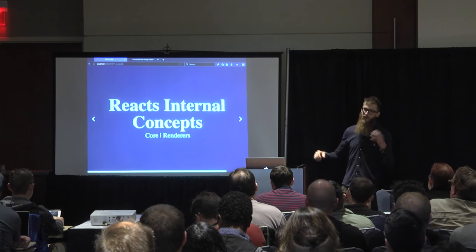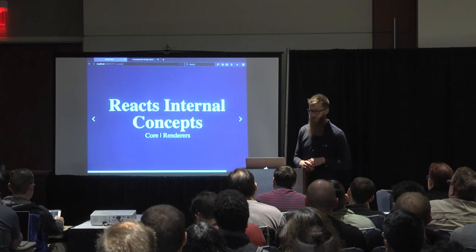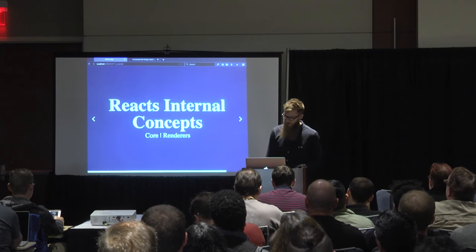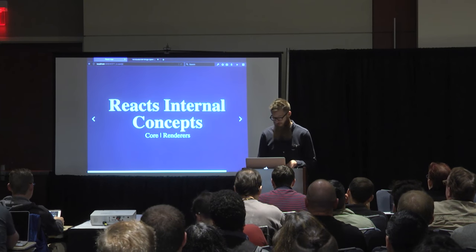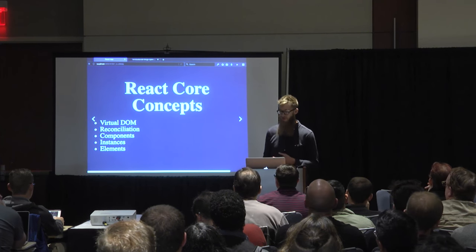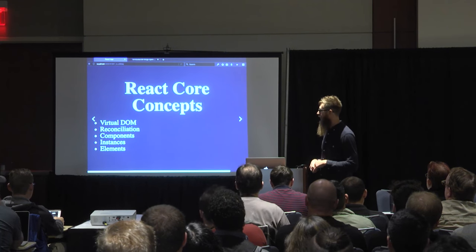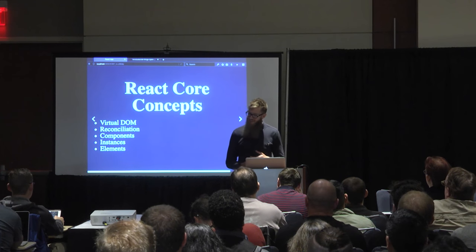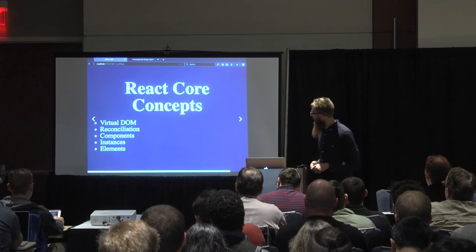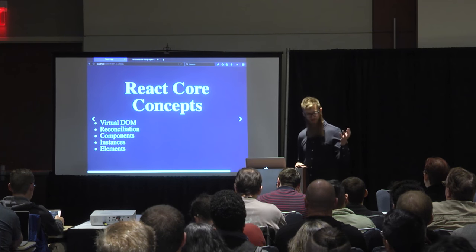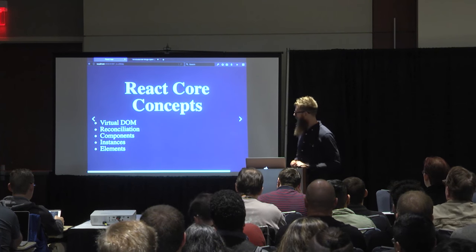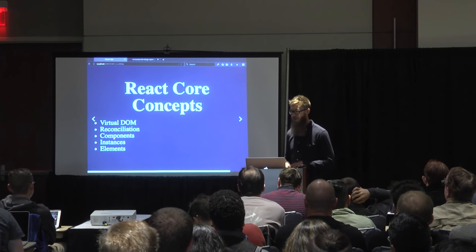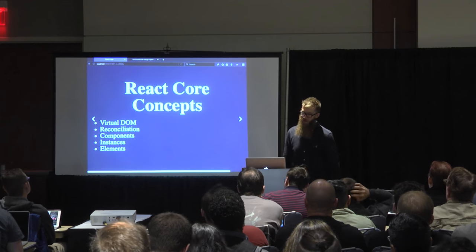As a whole, you can think of React as a core and a renderer. We just saw the renderer side, which is just taking those ideas and applying them to a certain thing. The core is all the other magic. In the React core there are a few concepts: the virtual DOM, reconciliation, React components — which we saw with the class extending React component — instances, which is what happens when React internally instantiates one of those things, and elements, which is basically just a big JavaScript object of what happens inside each render function.